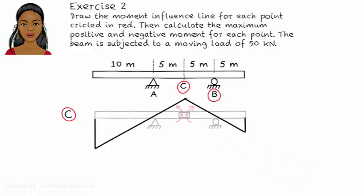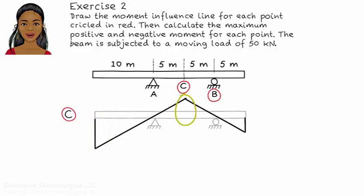According to the influence line, the maximum negative moment at C occurs when the load is at the left end of the beam, and the maximum positive moment at C occurs when the load is at C.